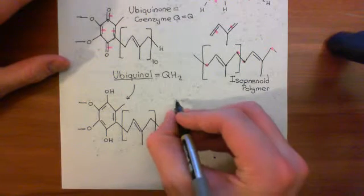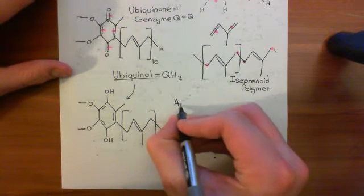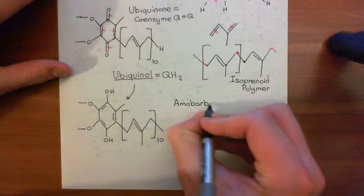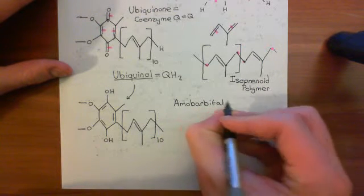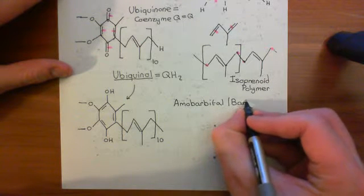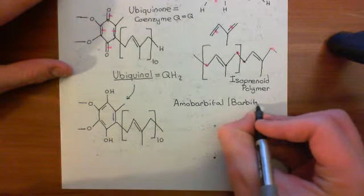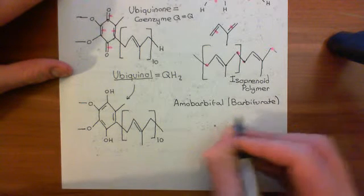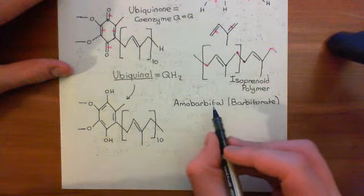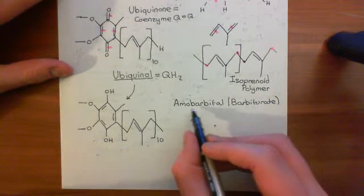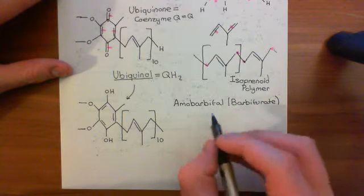We'll start with the drug amobarbital. All drugs with the ending barbital are barbiturate drugs. This drug, as well as having a lot of other pharmacological actions, actually does block the activity of Complex 1. Interestingly, this drug has a very interesting history.